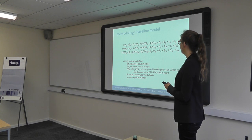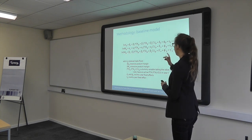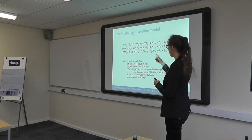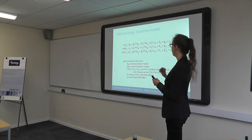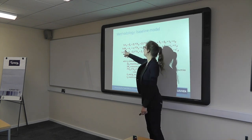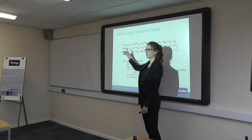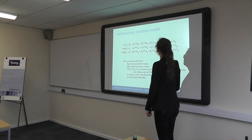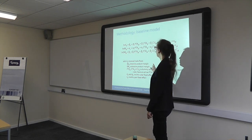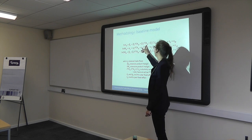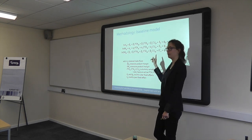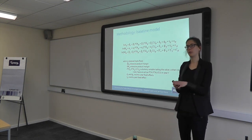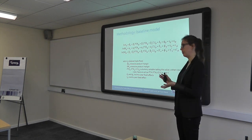This brings us to the baseline model. On the left-hand side, we estimate each equation three times: once with total bilateral trade flows, once with the intensive margin, and once with the extensive margin. On the right-hand side of the baseline model, we include PTA, FTA, and customs union dummies, plus a set of fixed effects which keep everything else constant so we can isolate the effects of the trade agreements.